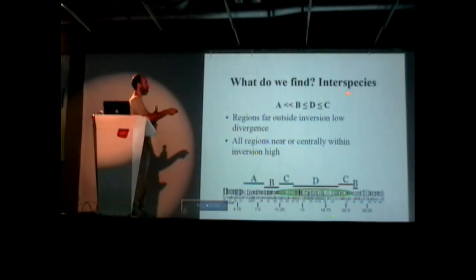Between the species, this is pseudoobscura-persimilis, we find that A is low, but B, C, and D are all very high. And we don't really see a particular difference between any of these. These are all high, but this is low. So when you're far outside of the inversion, it's low. When you're anywhere near, it's high. This is similar to the slides I showed you before. So all regions near or central within the inversion have high differences between the strains.